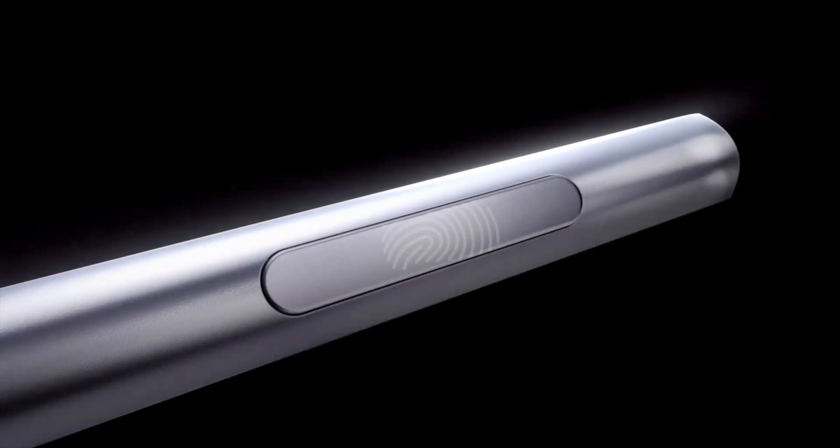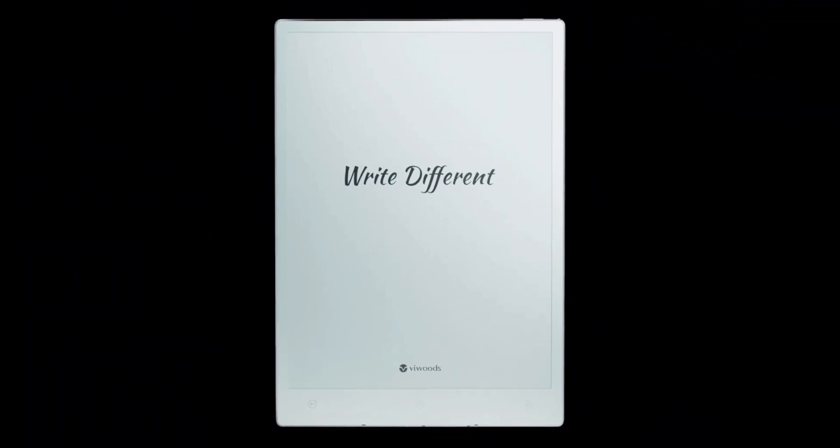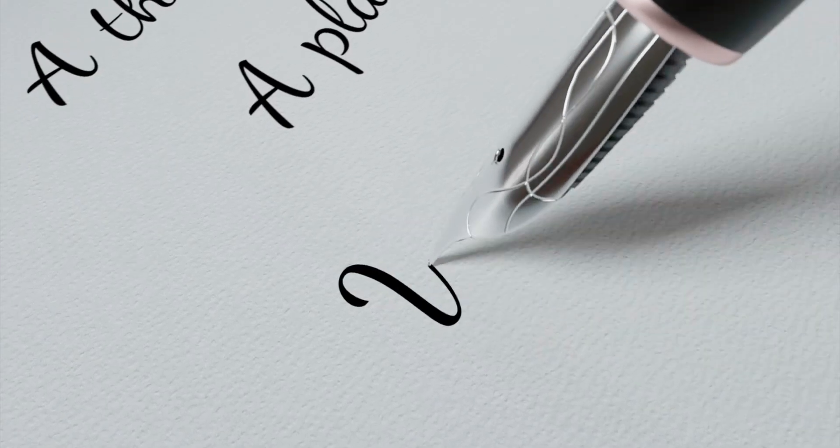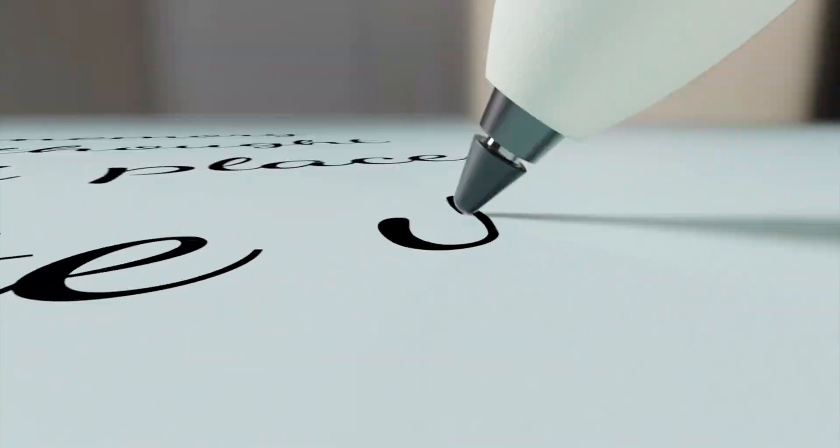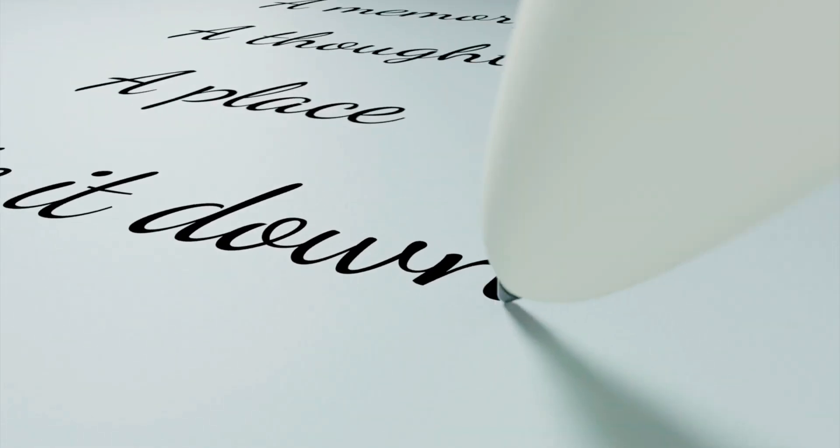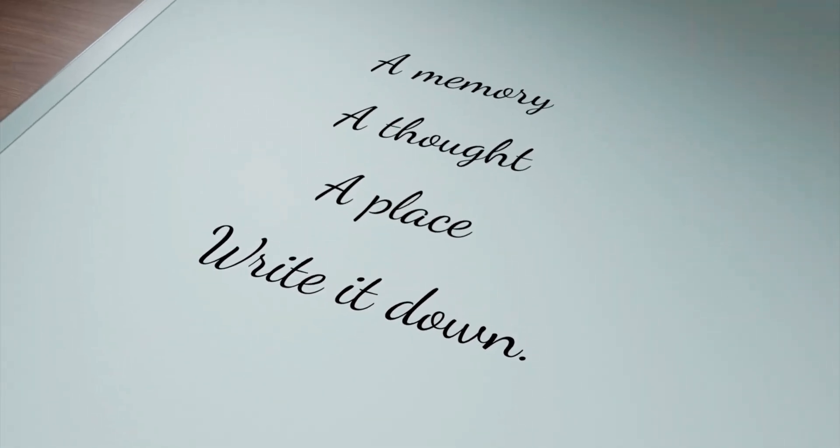The AI Paper eNote is only 4.5mm thin and tips the scales at just 370g. It features the latest black and white e-ink technology in the shape of Carta 1300, which is reckoned to offer a faster response time for slicker page turns and less ghosting than its predecessors.